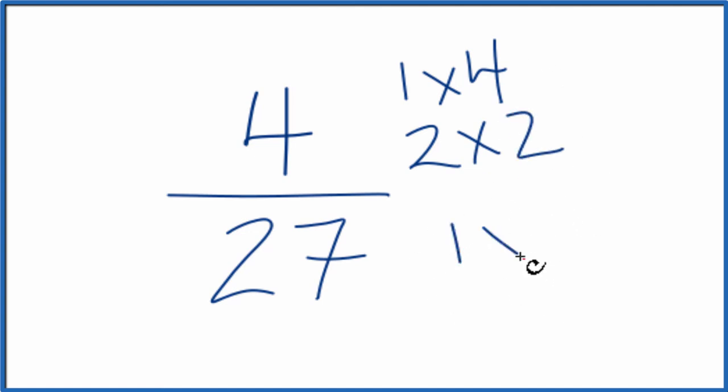For 27, 1 times 27, and then 3 times 9. I think that's all.